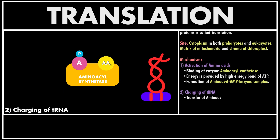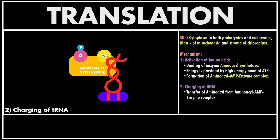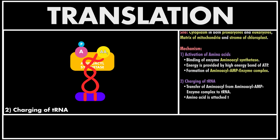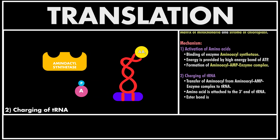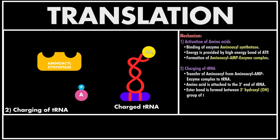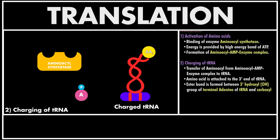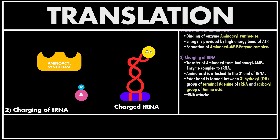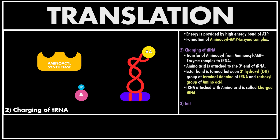The second step is charging of tRNA. In this step the aminoacyl-AMP enzyme complex combines with tRNA and the amino acid is transferred to the 3' end of tRNA. The 3' hydroxyl group of terminal adenine residue of tRNA and carboxyl group of amino acid are linked by formation of an ester bond. The tRNA having aminoacyl group attached is called charged tRNA.